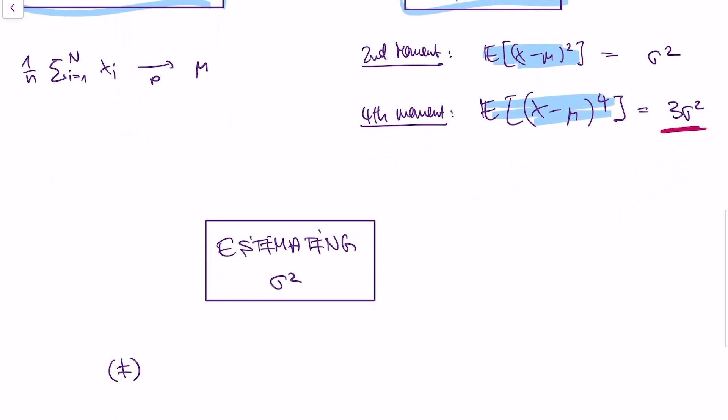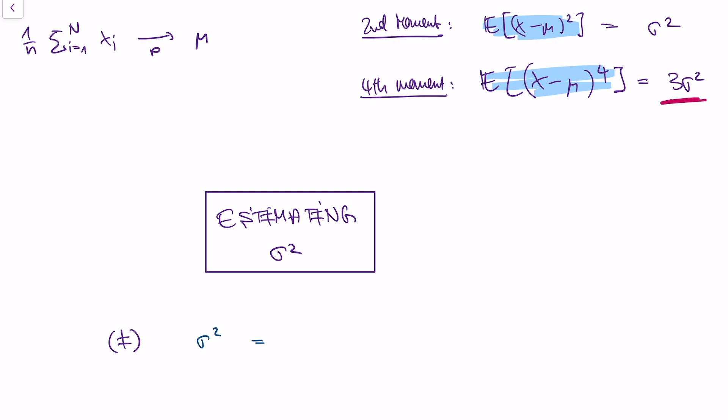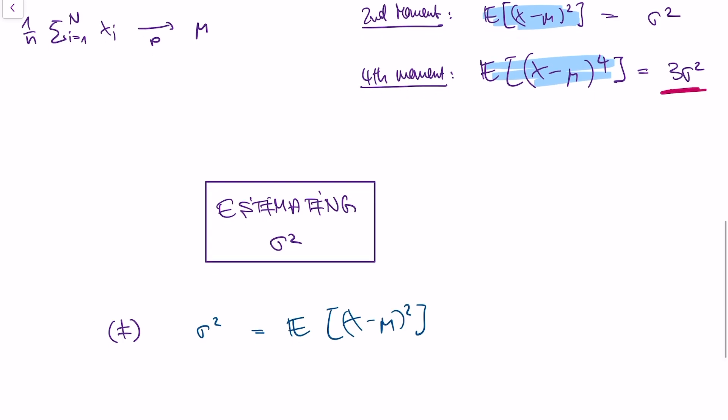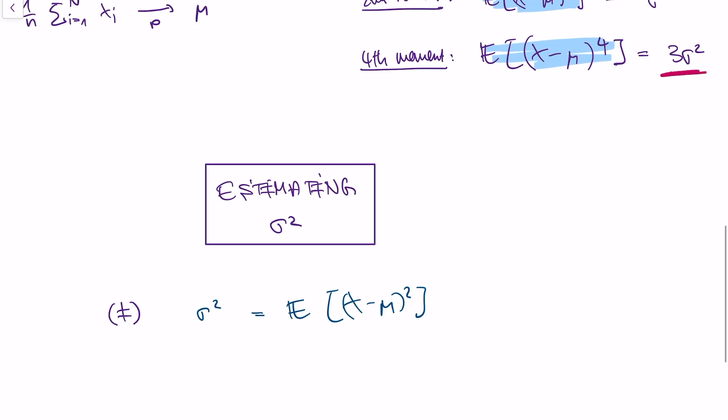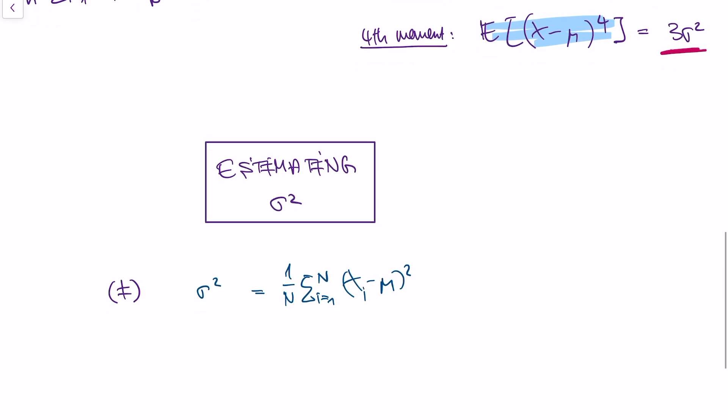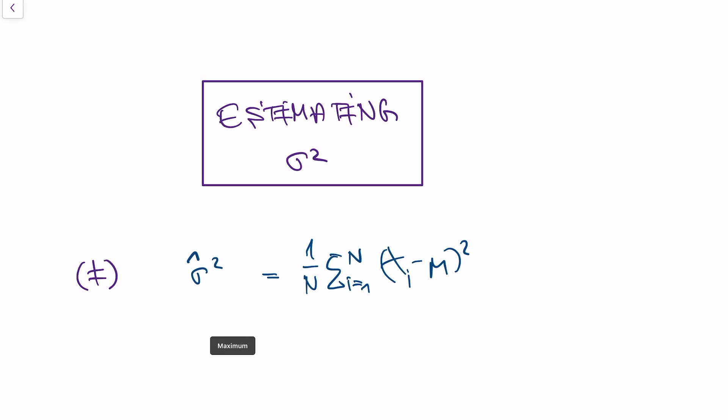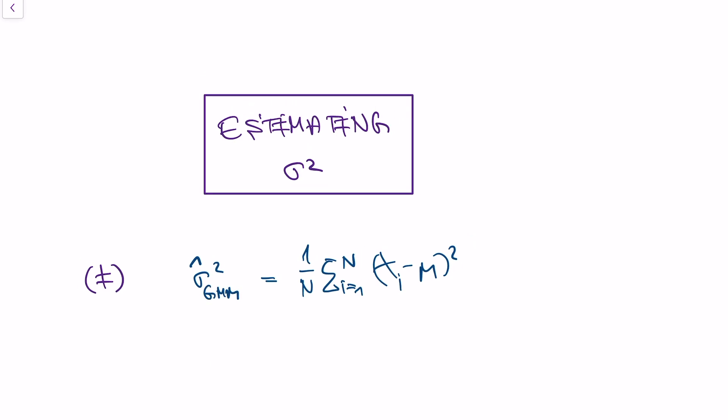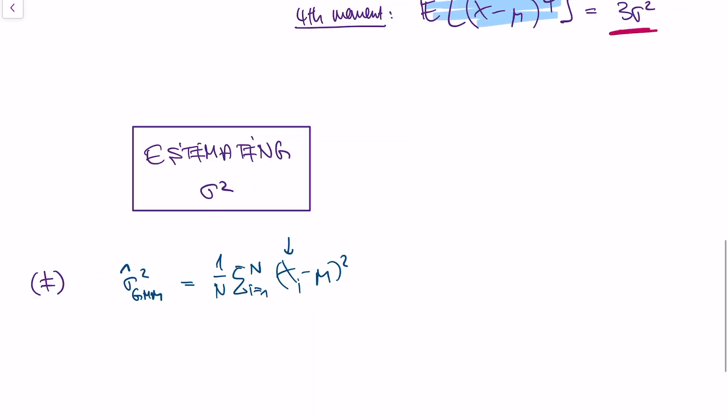So what could we do? Well, let's look at this equation for our second moment. We say that the variance is equal to the expected value of x minus mu squared. But what does the law of large numbers say? Well, the law of large numbers says that the average is actually a very good estimator for the expected value. So we could swap out this expected value and use a sum, an average instead. And this actually gives us an estimator.